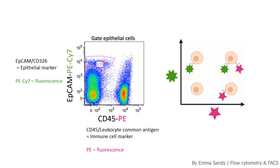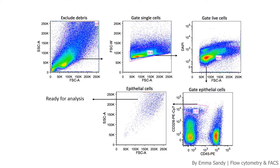With this two-parameter plot we can see cells that have neither marker down in the bottom left. We can also see some leukocytes which are positive for CD45 over here, and the epithelial cells I'm interested in which are EpCAM positive up here. At this point it's really good to go back and see what the cells you've selected actually look like — this is called backgating, where you take the cells of interest and put them back onto the very first forward scatter and side scatter plot. We can see that most of these lung epithelial cells are big and granular.